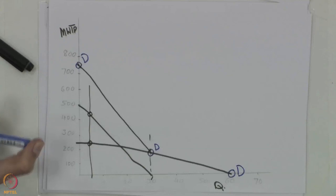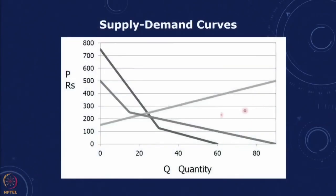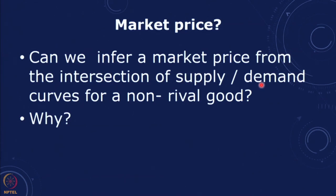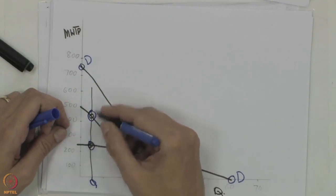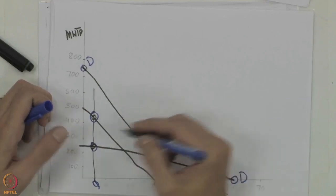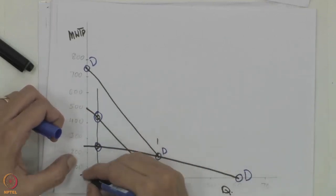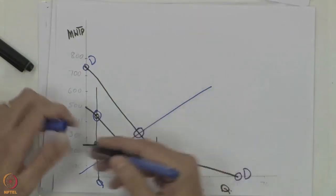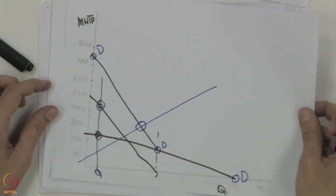The problem is that in the case of a private good, when supply and demand curves intersect, the marginal cost of production equals the price. But in the case of a public good which is non-rival, we will not be able to infer the market price from the intersection of the supply and demand curves. If the quantity supplied is a certain value, the two consumers are actually seeing different prices, and so we do not know what the individual prices will be. This is a key issue for non-rival or public goods.